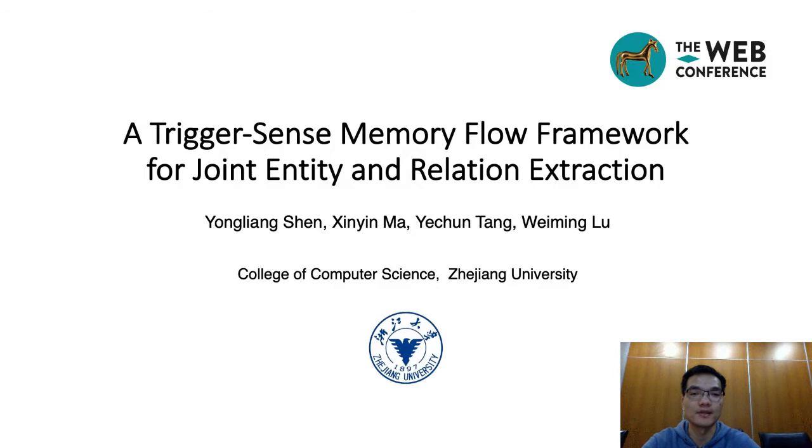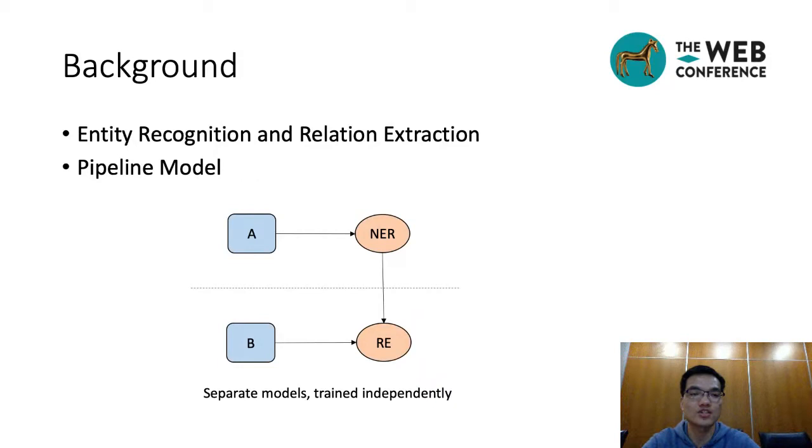Entity Recognition and Relation Extraction aim to extract structured knowledge from unstructured text and hold a critical role in information extraction and knowledge-based construction. Current methods fall into two categories: pipeline method and joint method. Pipeline methods label entities through an entity recognition model and then predict the relation between them through a relation extraction model. The two models are separate and are trained independently.